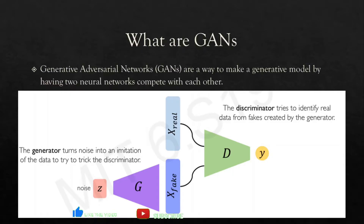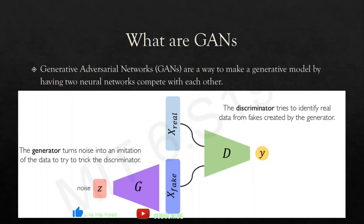A GAN has two components: a generator and a discriminator. The generator turns noise into an imitation of the data and tries to trick the discriminator. The discriminator tries to identify the real data from the fake data, classifying inputs as real or fake. The main goal of the generator is to fool the discriminator.